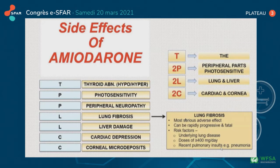Side effects of amiodarone should be known by physicians: thyroid abnormalities, photosensitivity, peripheral neuropathy, lung fibrosis, liver damage, cardiac depression, and corneal micro-deposits.